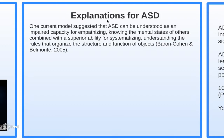ASD can be understood as an impaired capacity for empathizing — knowing the mental states of others, or theory of mind — combined with a superior ability for systematizing, or understanding the rules that organize the structure and function of objects. These individuals lack empathy and are not able to read the emotional or mental states of others.